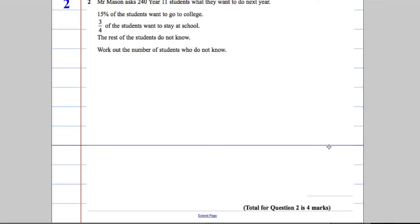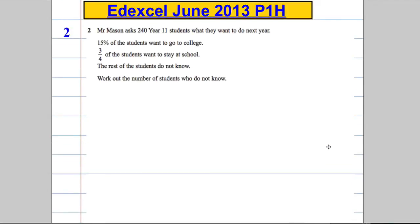So question two is for four marks. We're told Mr. Mason asks 240 year 11 students what they want to do next year.